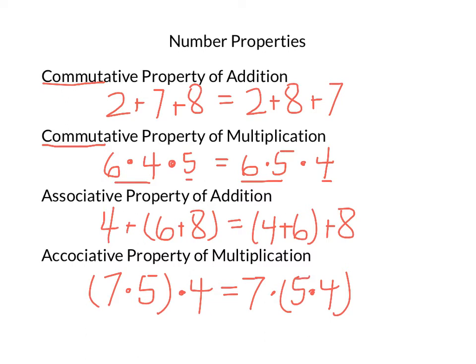So notice with the associative property that none of the orders change. 4, 6, 8, 4, 6, 8, and 7, 5, 4, 7, 5, 4. So with the associative property, the order does not change. Just these parentheses change. We regroup.